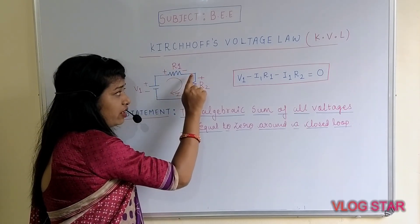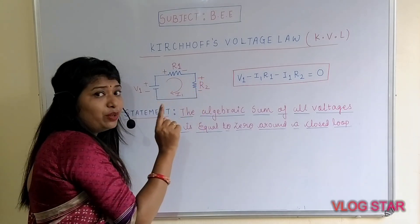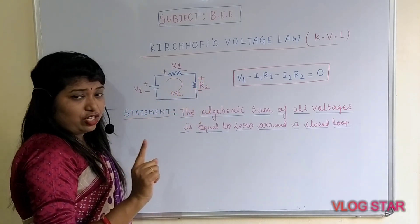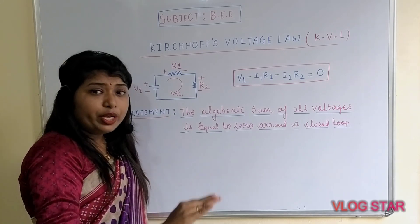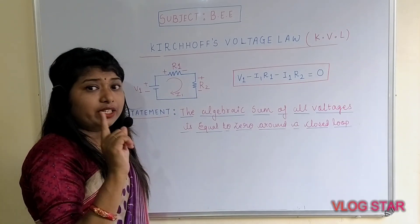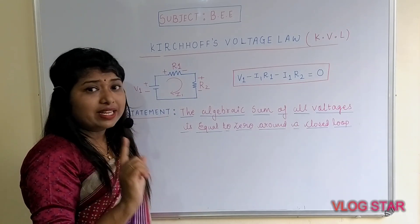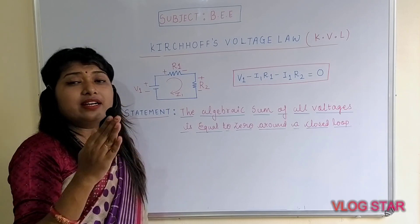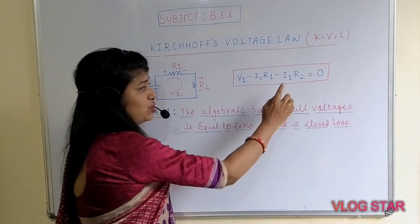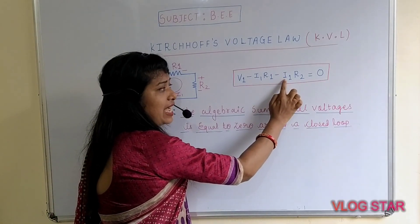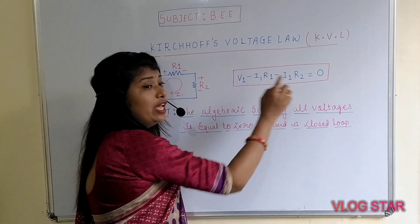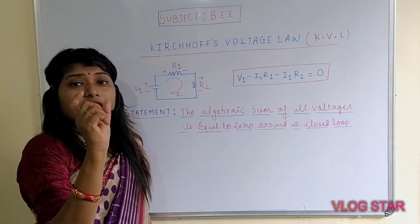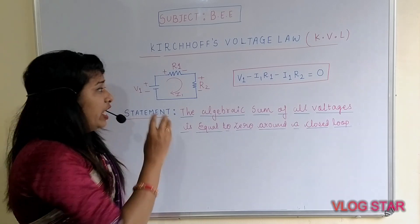Again applying the third sign convention: the direction of the current and the polarity assigned to the resistor are both in the same direction, so there will be a fall in potential and the voltage drop across that resistor is given by −i × R, which gives us −i1 × R2.